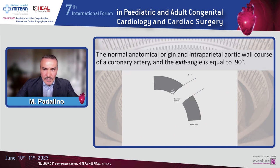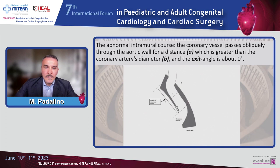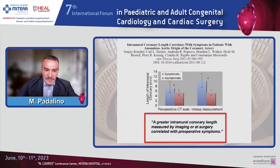The normal anatomic origin of a coronary artery has an exit angle of about 90 degrees. However, we may have an abnormally angulated orifice in which the coronary vessel passes obliquely through the aortic wall, through a distance equal to or less than the coronary artery diameter, and the exit angle is less than 90 degrees. The real intramural course is one where the coronary vessel passes through the aortic wall for a distance much bigger than the coronary artery diameter, with an exit angle of about 0 degrees. A greater intramural coronary length, measured by imaging or at surgery, is correlated with preoperative symptoms.